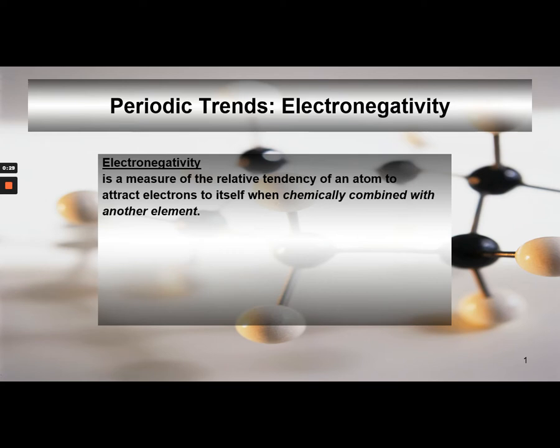Electronegativity is a measure of the tendency of an atom to attract electrons when chemically combined with another element. That's very different than ionization energy or electron affinity. It has everything to do with when atoms are combined with another element.